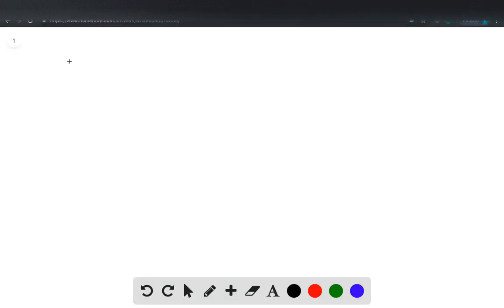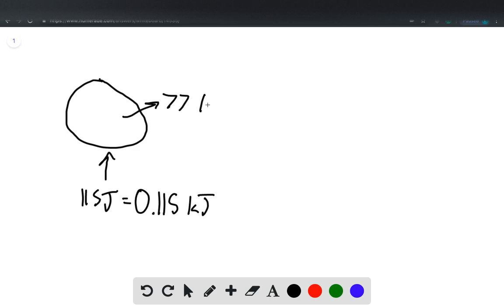So this problem gives us a balloon which absorbs 115 joules of heat, and that's equal to 0.115 kilojoules. And while it expands, it does 77 kilojoules of work.